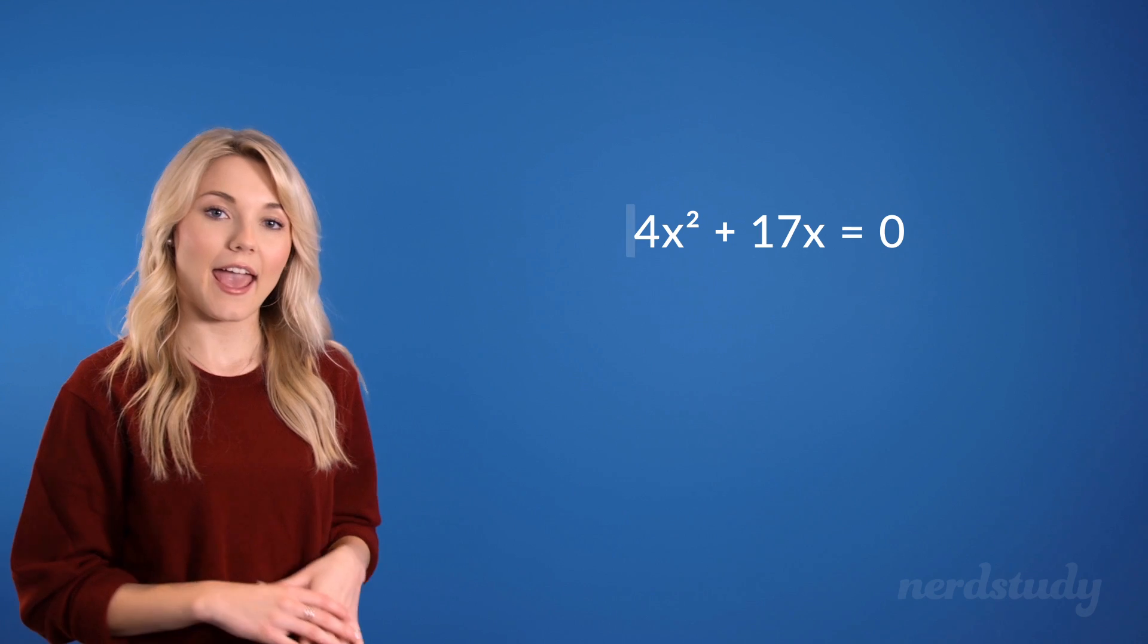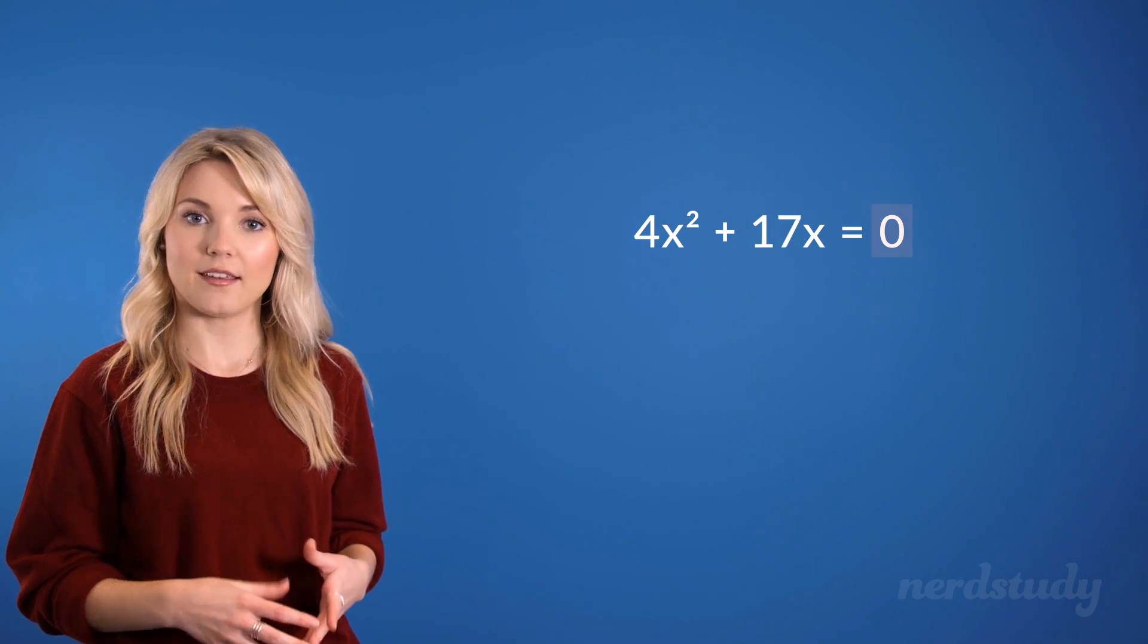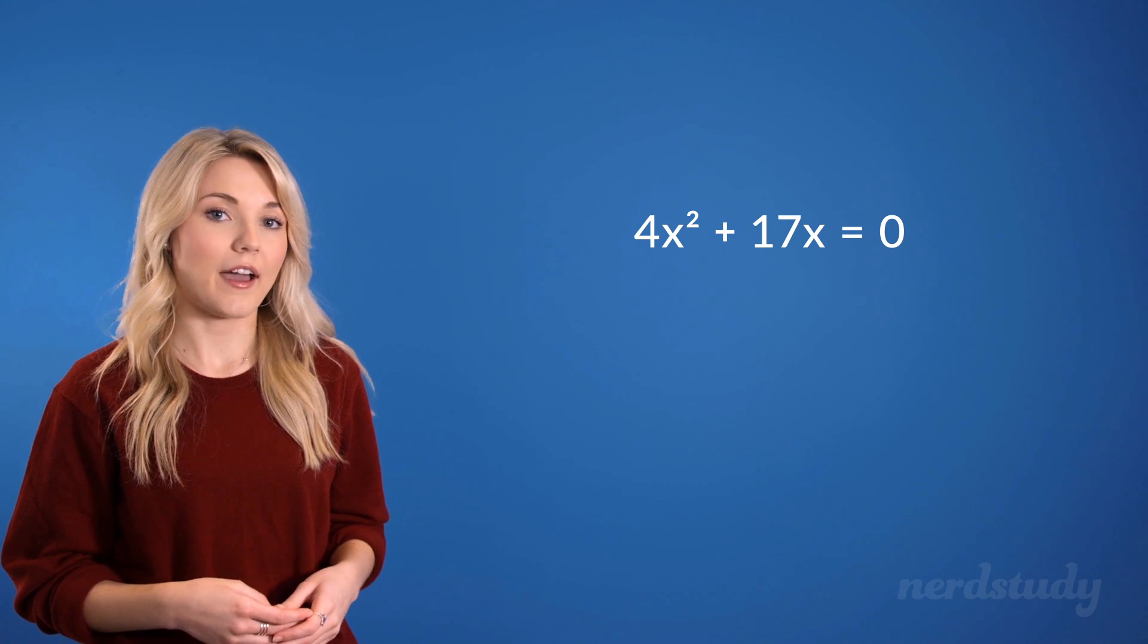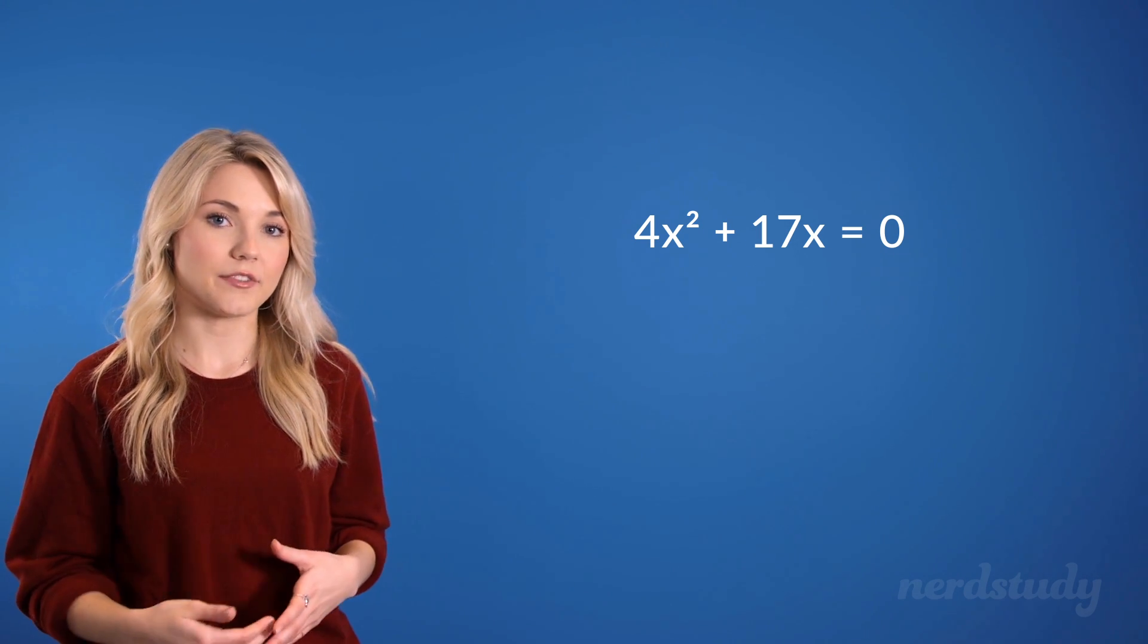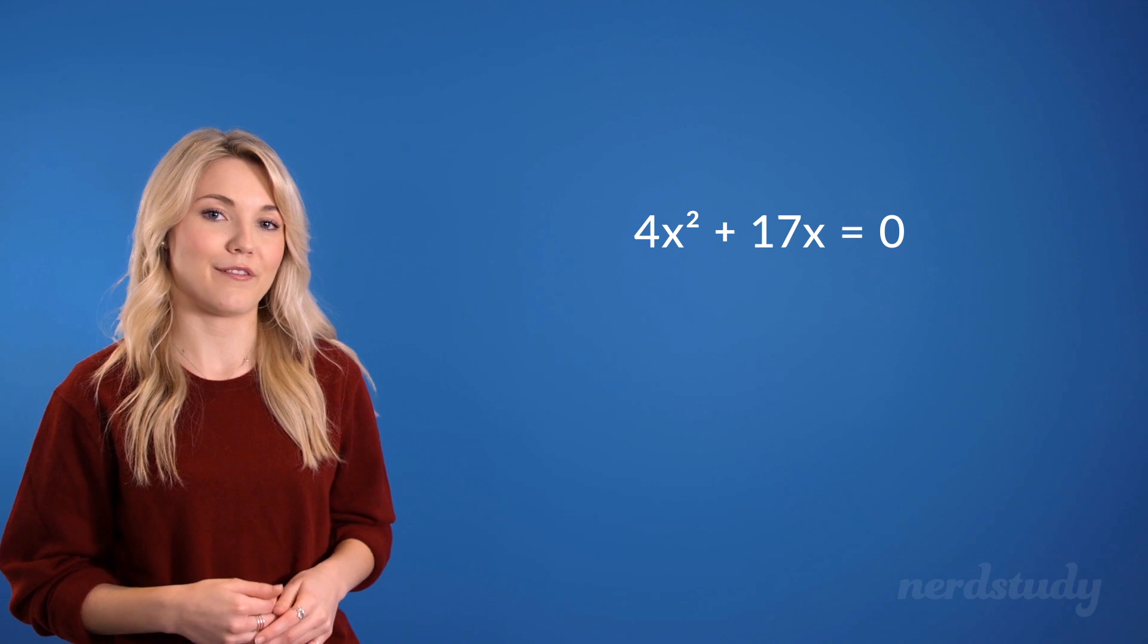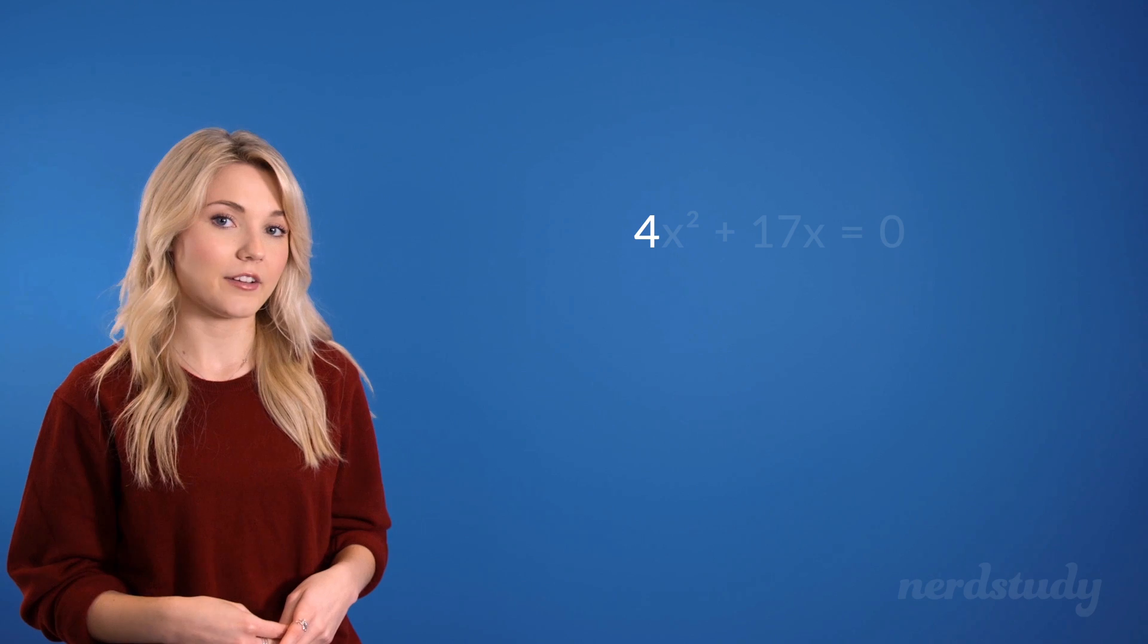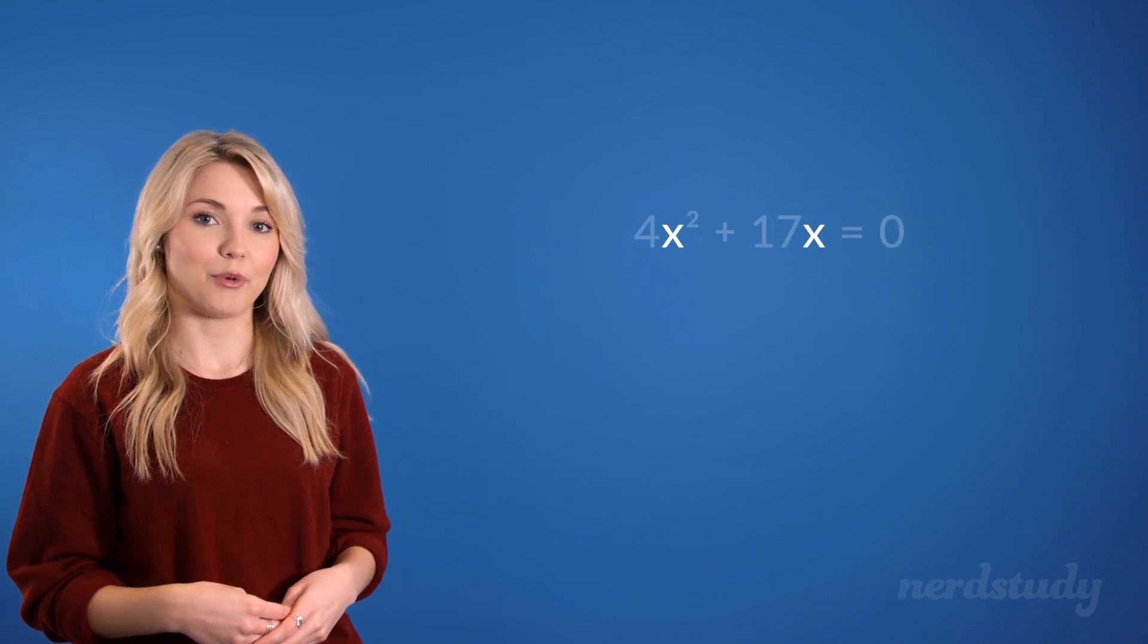So let's try another example. In this scenario, we've got an a and a b, but our c is 0. This kind of question is the easiest. You simply factor out an a with an x variable, and you'll be one step away from the answer. Here, we've got 4 as our a value, and if we also factor out an x at the same time, we get this.